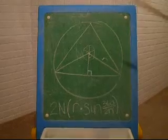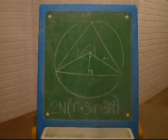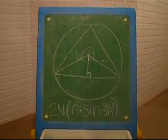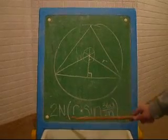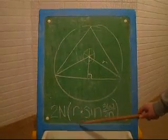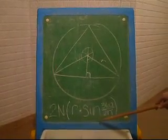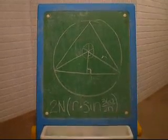Here we have a triangle inscribed into a circle. The formula for an inscribed polygon in a circle is 2n times r times the sine of 360 over 2n.